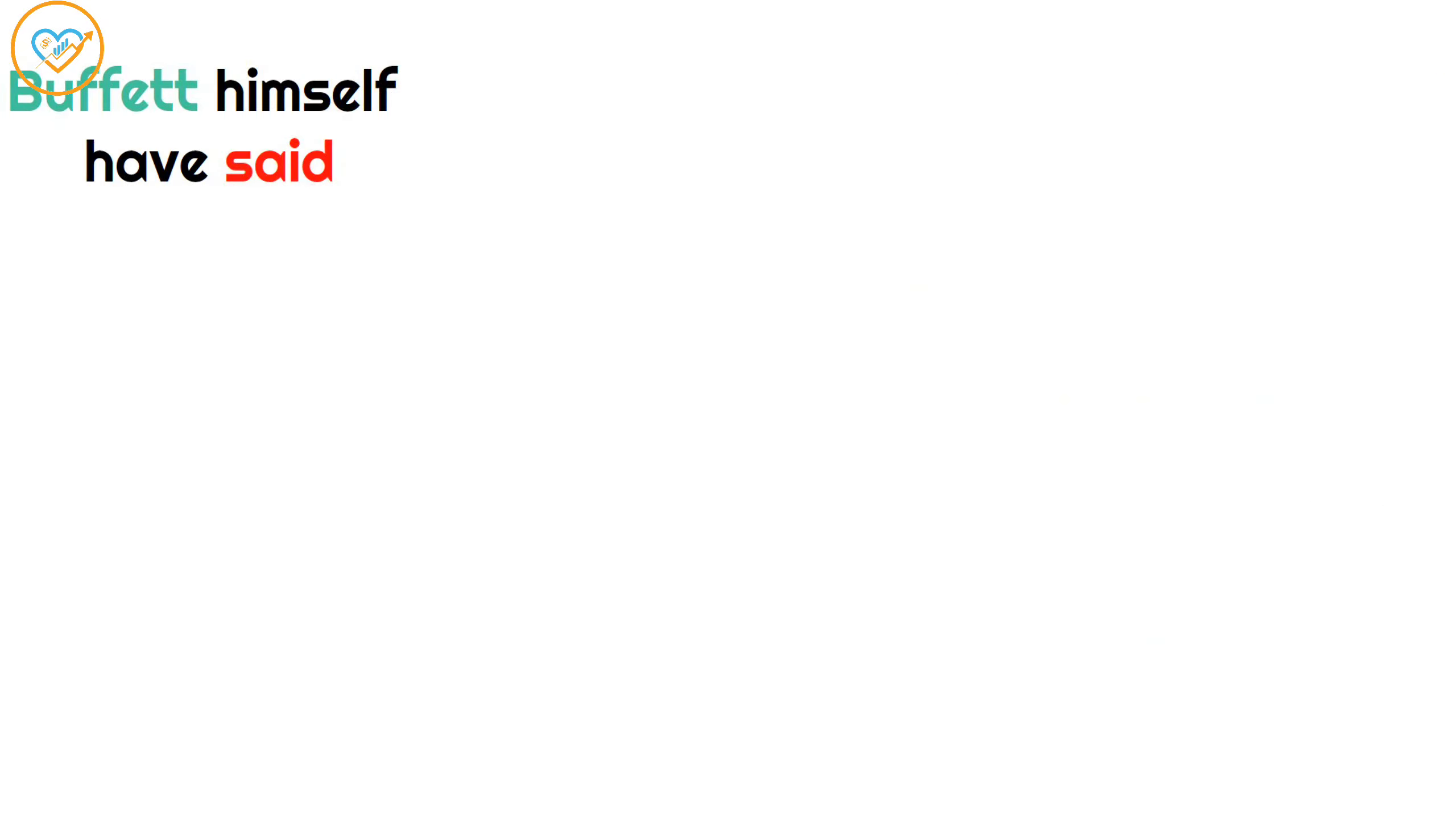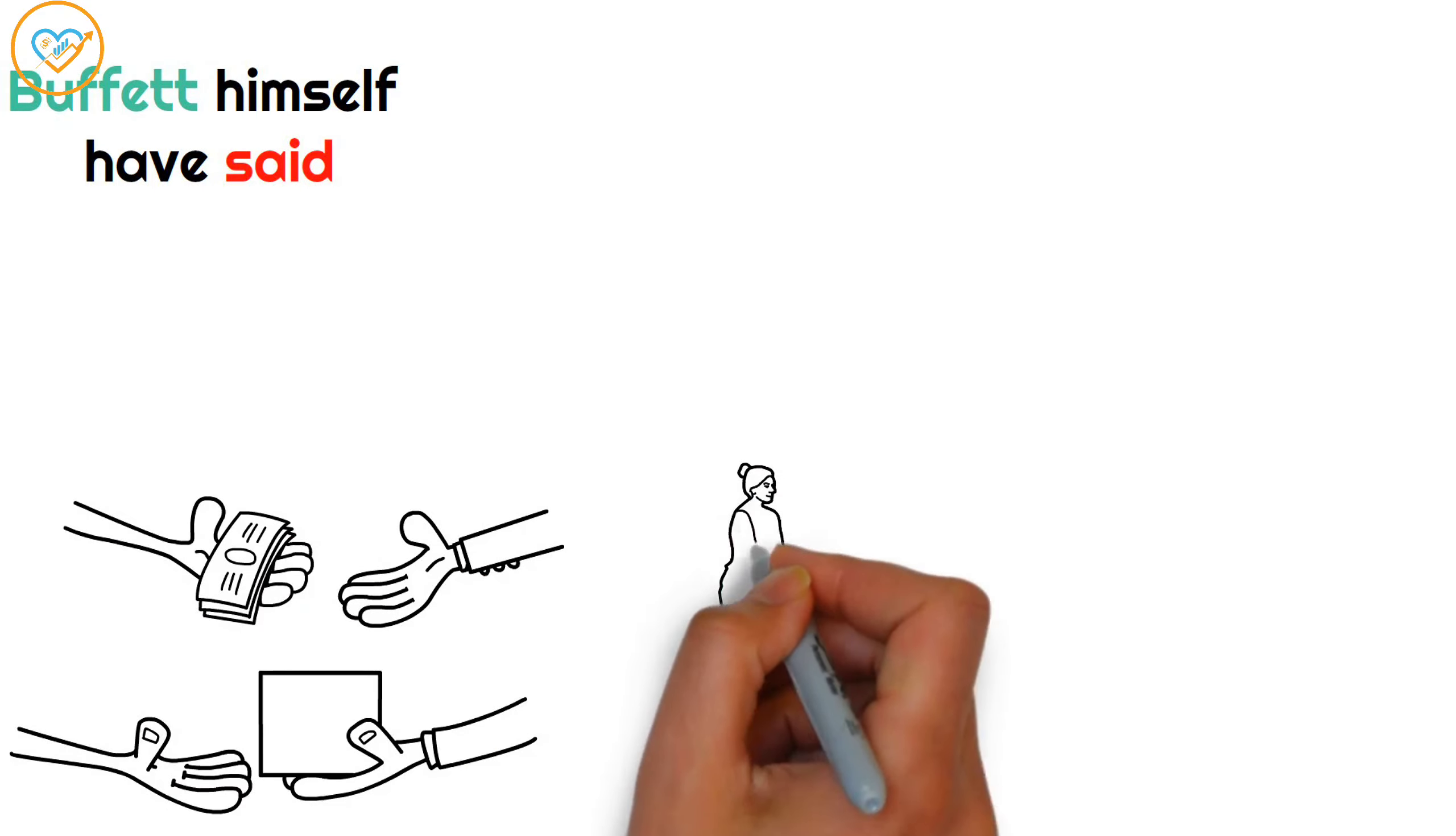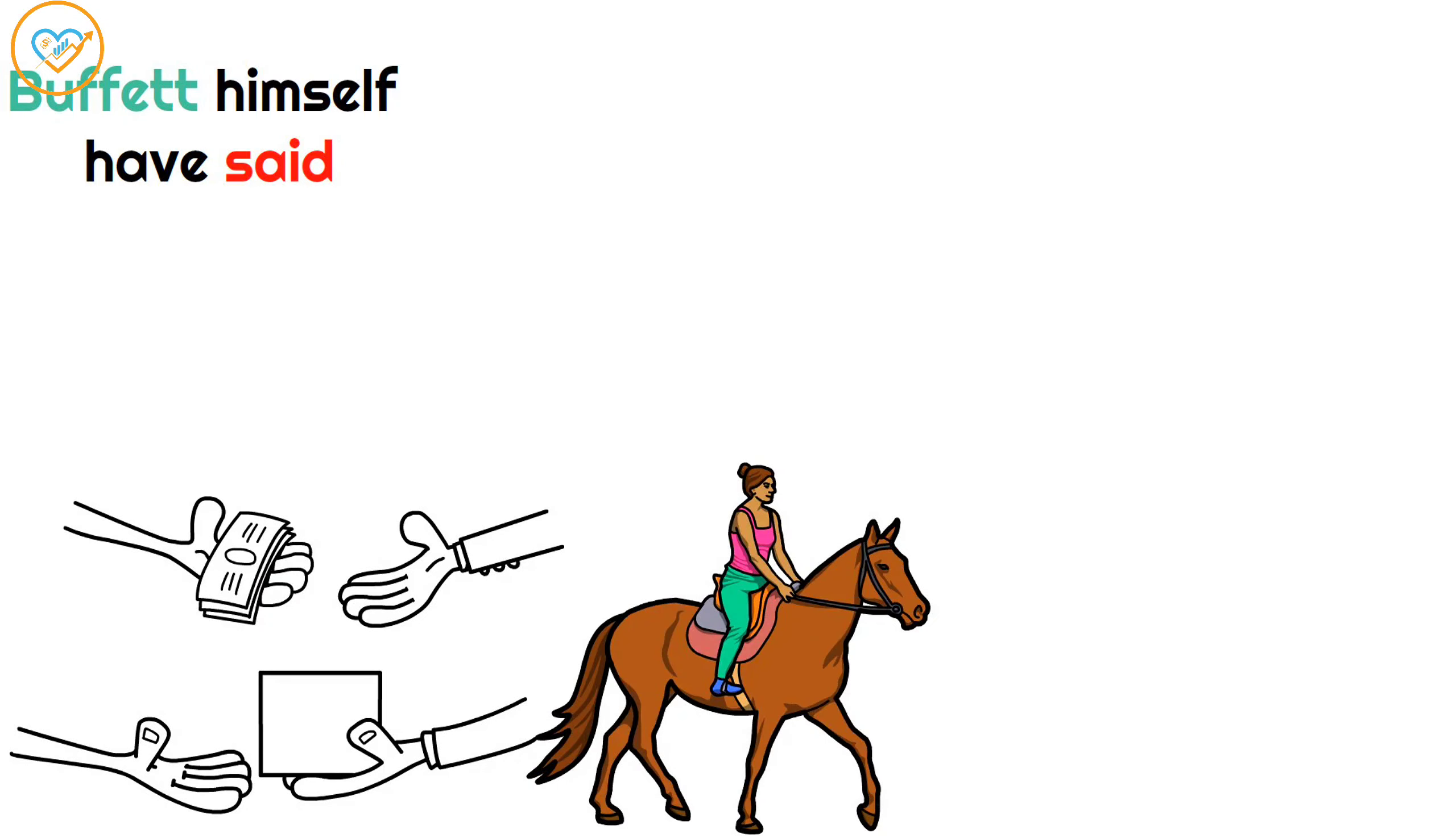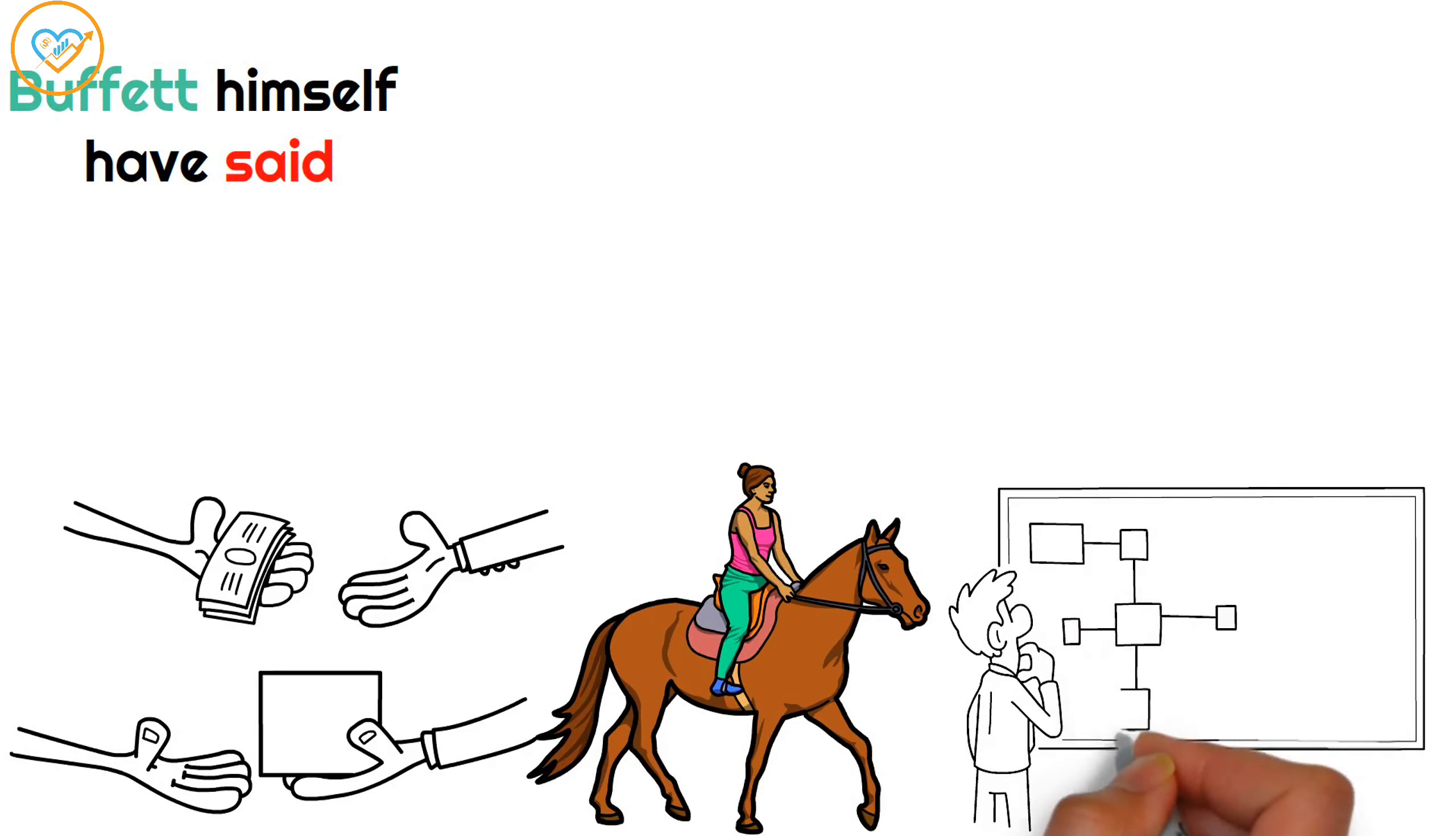As Buffett himself has said, the best single thing you could have done was just buy an index fund. Think of it like this. Investing in one company is like betting all your money on a single horse race, whereas index fund spreads your investment across a whole stable of horses.